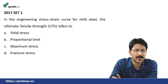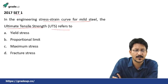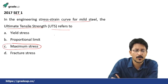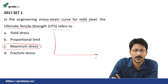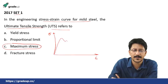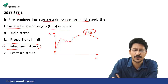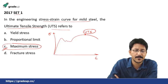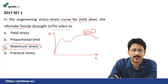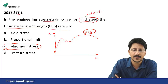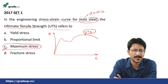GATE 2017, Set 1: In the engineering stress-strain curve for mild steel, the ultimate tensile strength refers to — the UTS simply refers to the maximum stress. Mild steel is a ductile material; in its stress-strain curve the UTS point simply signifies the maximum stress, for mild steel and other ductile materials as well. Very easy question.